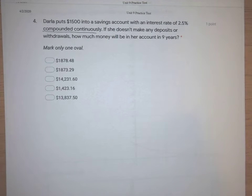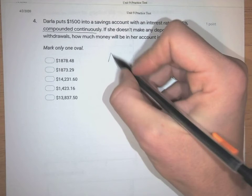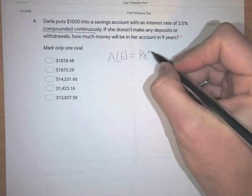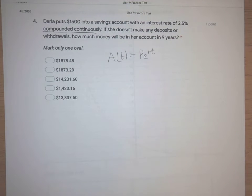So we don't want the compound interest equation that has n's in it, because n stands for a number of times compounded per year. This is always compounding. So the formula we're going to use here is the continuous compounding interest formula, which looks like this.